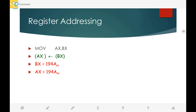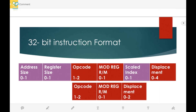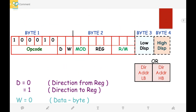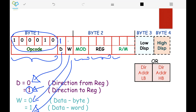Let us start with the instruction format. Let the MOV instruction opcode be 1 0 0 0 1 0. Now for the d-bit, let us consider the first case as direction to the register, so d will become 1. And since we are using AX and BX registers, we are using a data word, so w is also 1.